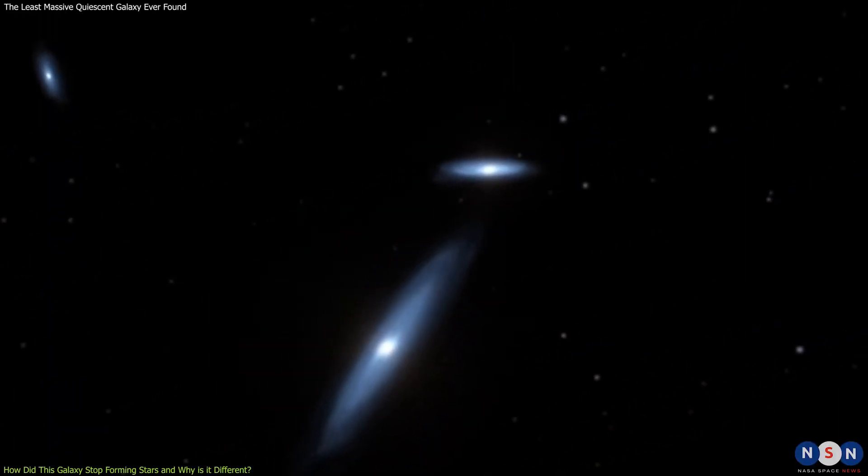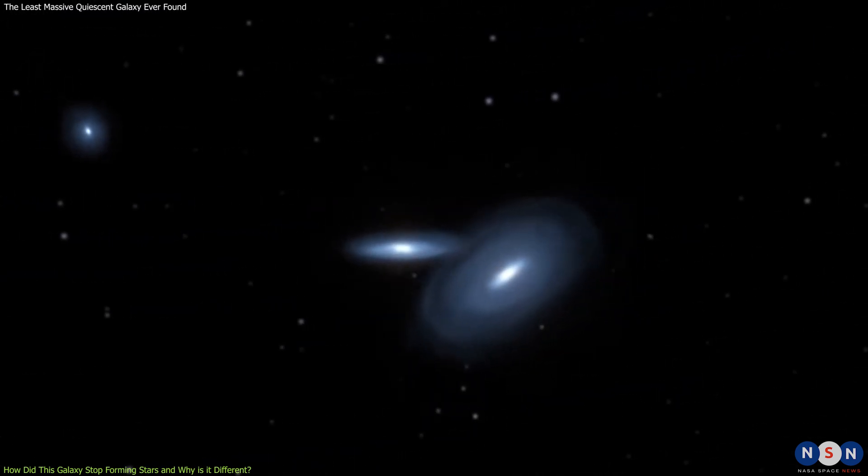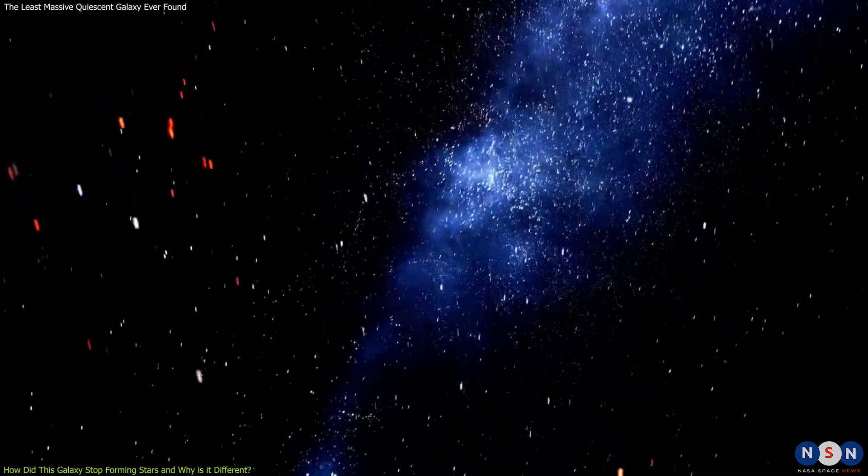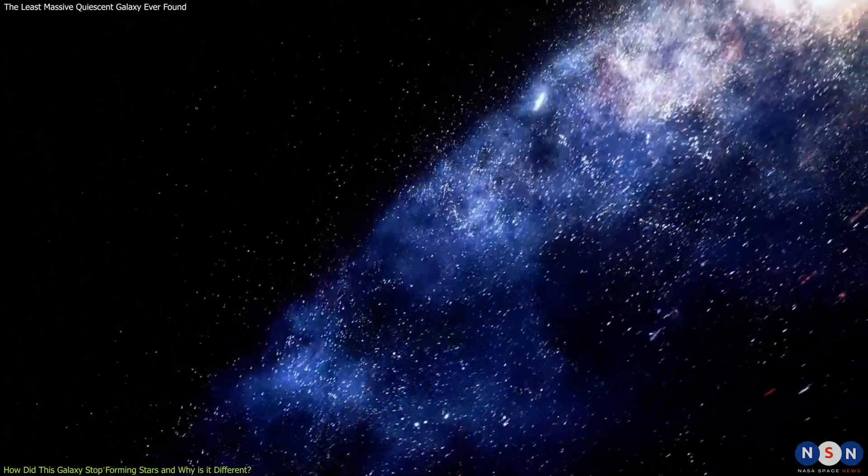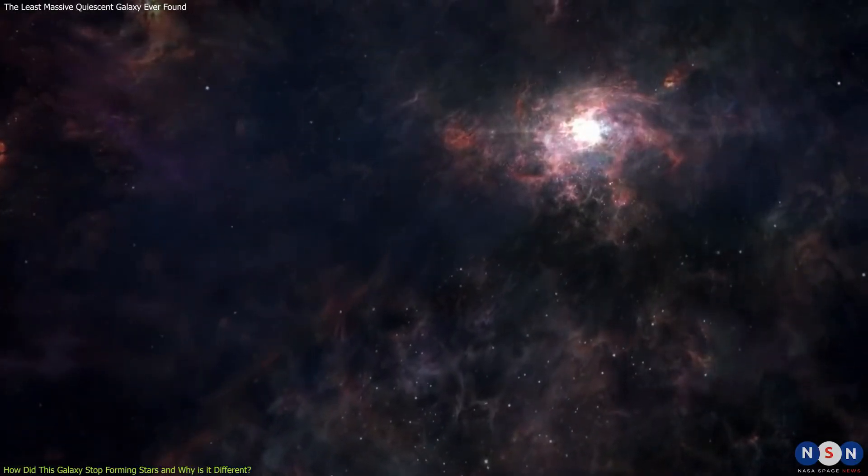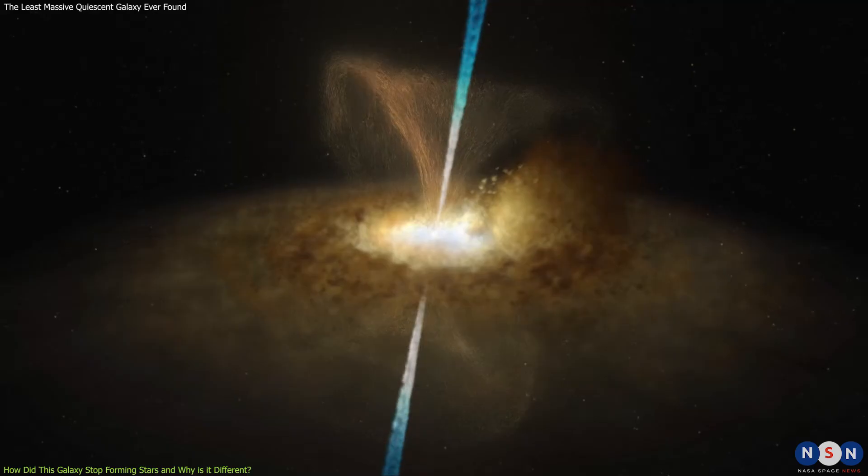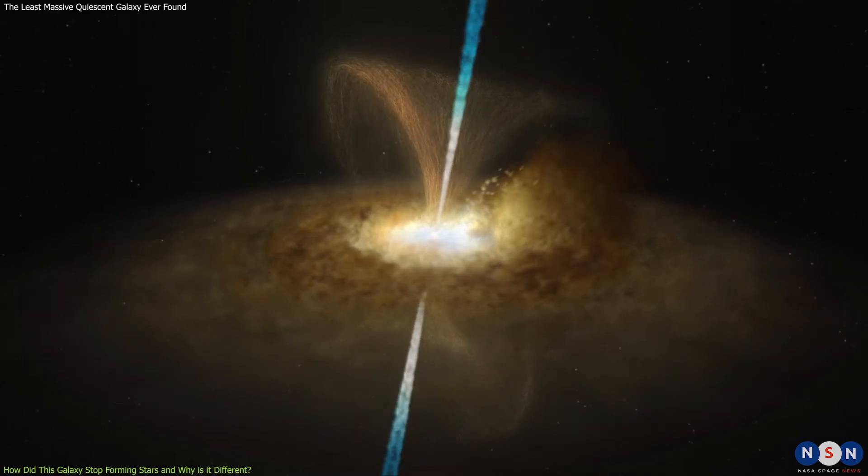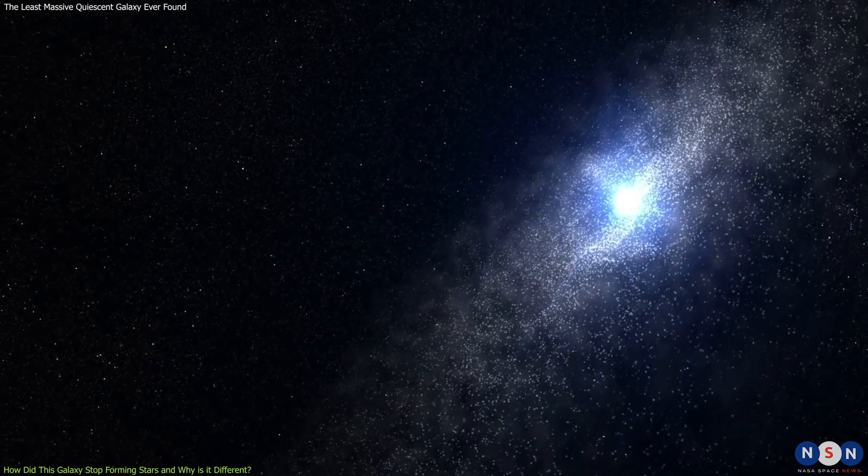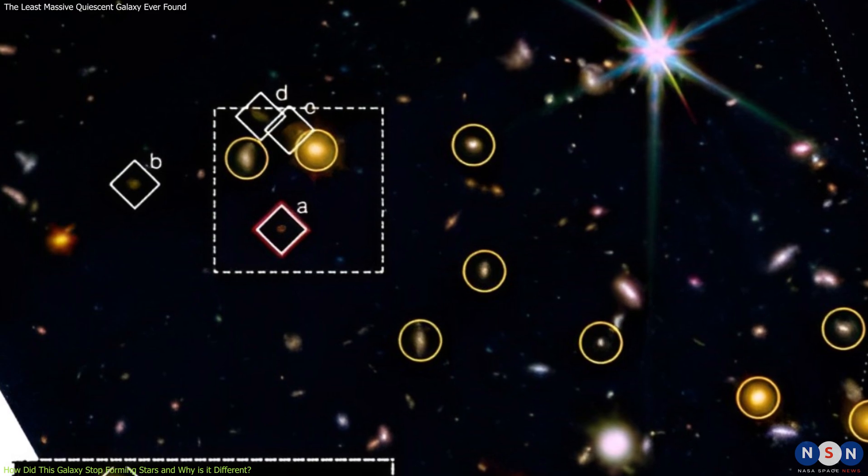This is very puzzling because it implies that this galaxy did not undergo any major mergers or interactions with other galaxies, which are usually the main drivers of bulge formation and star formation quenching in massive galaxies. How can such a low mass and isolated galaxy stop forming stars so early and rapidly without any external triggers or influences? One possible explanation is that this galaxy experienced some internal feedback mechanisms, such as supernova explosions or active galactic nuclei (AGN), which are powerful sources of energy and radiation that can heat up and expel the gas from the galaxy, preventing new stars from forming. However, there is no evidence of any AGN activity or strong outflows in it, which makes this scenario unlikely.